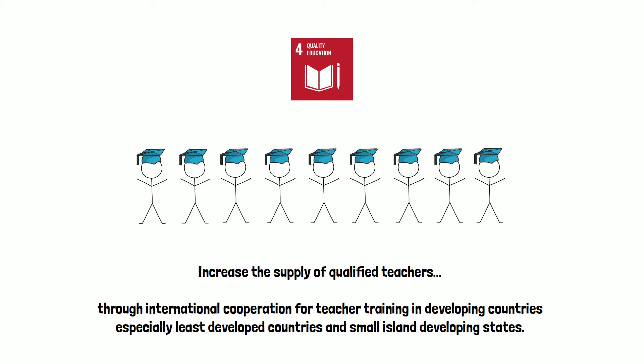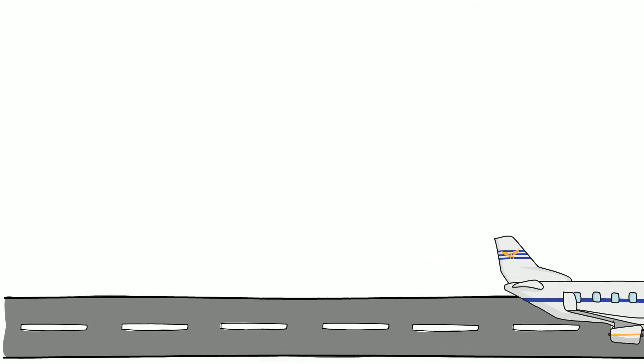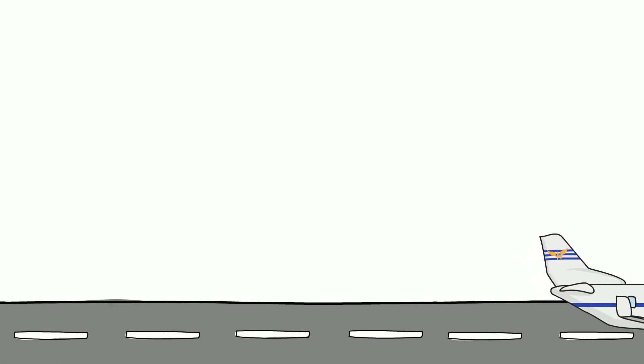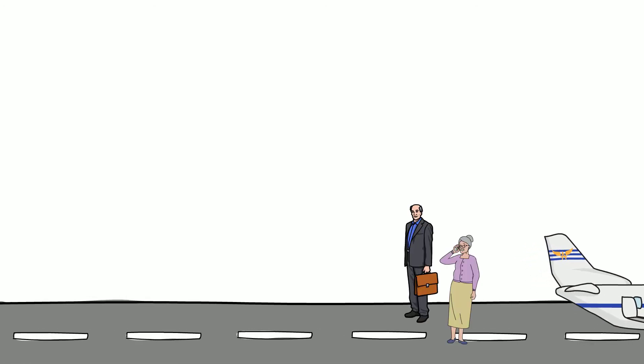This specific target aims to increase the supply of qualified teachers. So, the question is, how can we achieve this sustainably and create long-term change? One might argue that in order to increase the supply of qualified teachers, we could set up a program where we have a pool of experienced volunteer teachers from the UK who are sent to a developing country on a rotational basis.